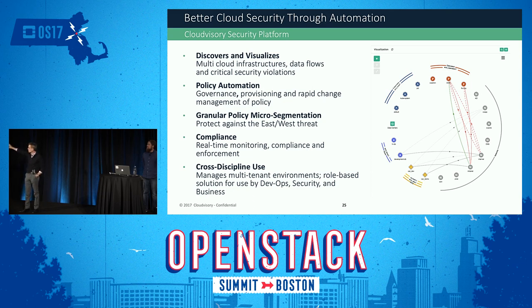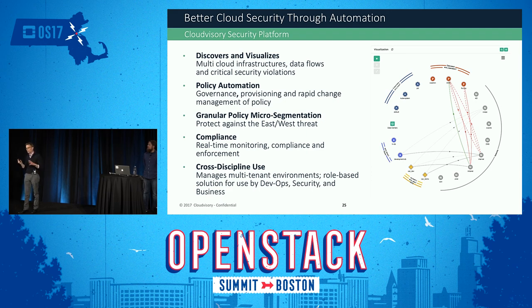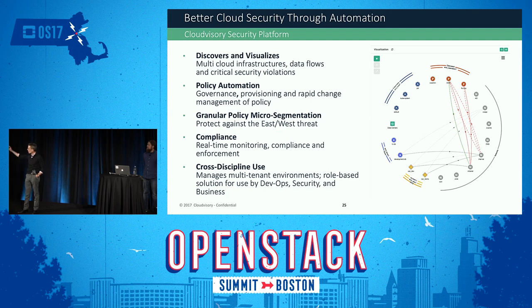We do policy automation for these environments. After we discover and visualize the environment, we actually automate the governance, provisioning, and rapid change management of that security policy. As you know in OpenStack, if I don't explicitly say what ingress and egress a workload can have, there's no communication happening to it. So this is a way to automate all of those controls and then monitor those controls. The next thing we do is granular policy micro-segmentation. This is a huge issue — just like in traditional data centers, it remains in public and private cloud. We have this issue of the east-west threat: a piece of malware gets into a workload and wants to travel east-west. We're able to detect, monitor, and shut those threats down through granular policy micro-segmentation.